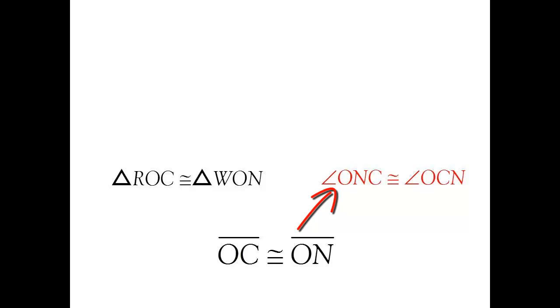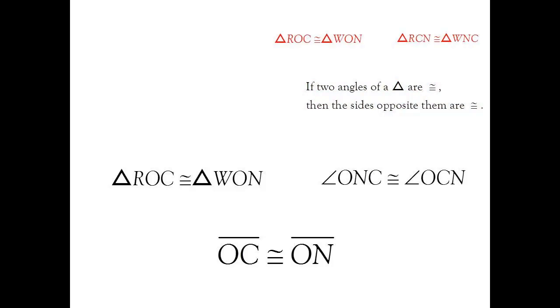Now, if segment OC and ON are congruent to each other, that would mean that angle ONC and angle OCN also have to be congruent. Now, what would lead us to that possible conclusion? Well, if two angles of a triangle are congruent, then the sides opposite of them must also be congruent. So how could we show that those two angles are congruent?